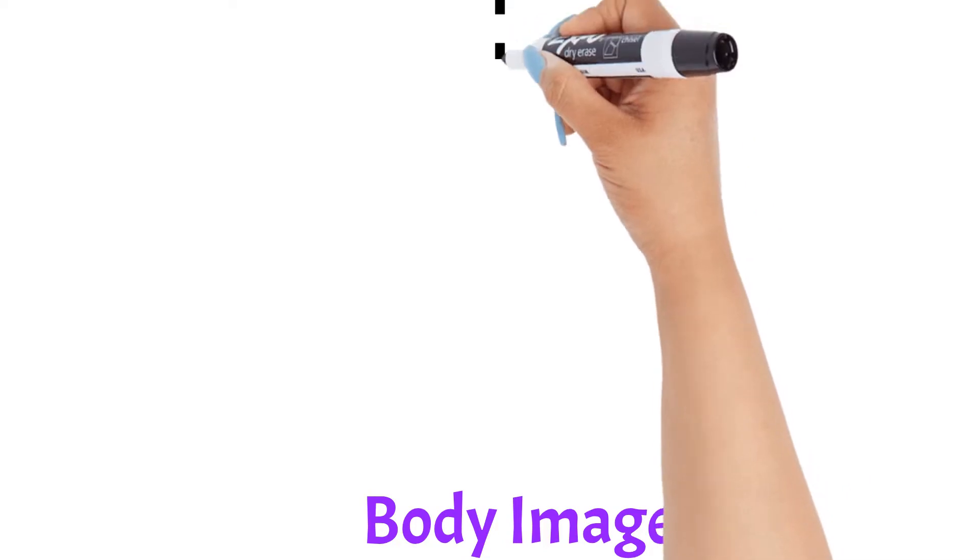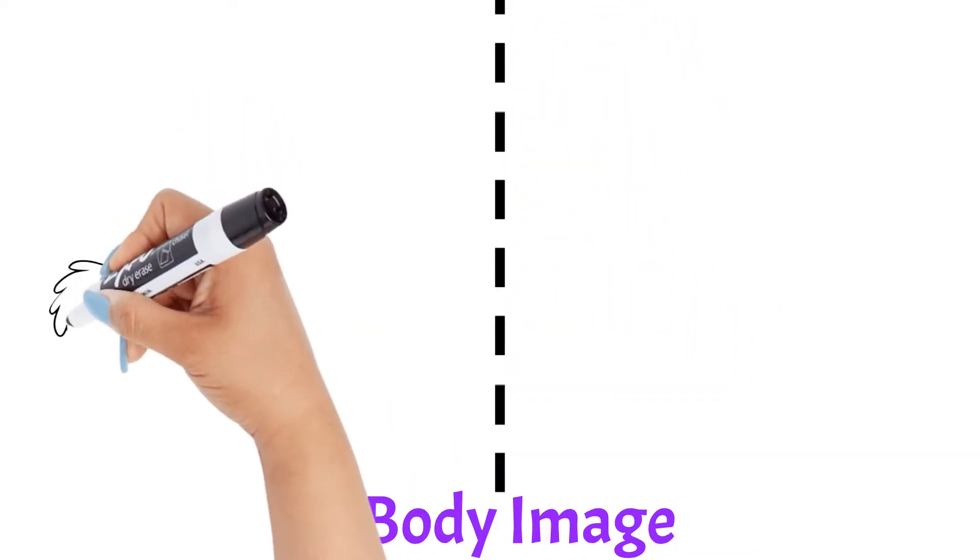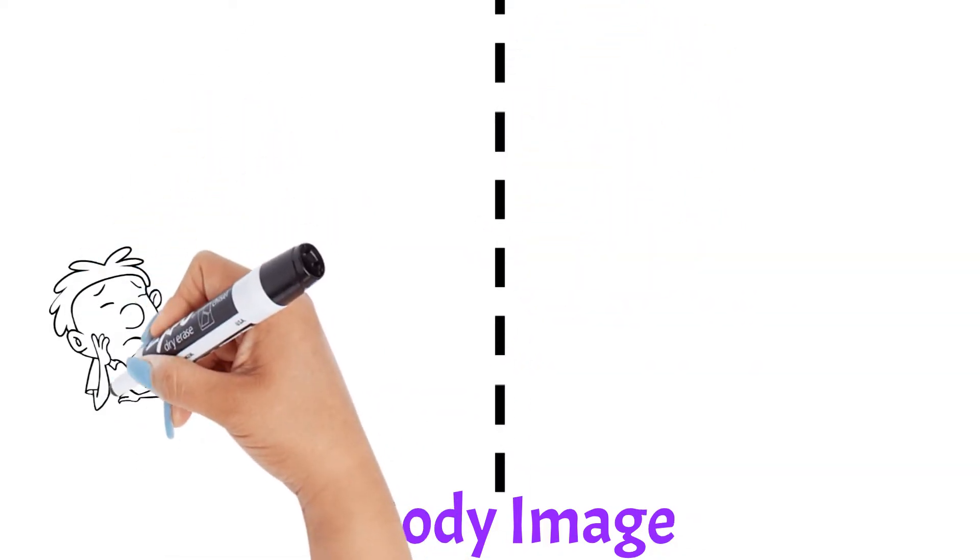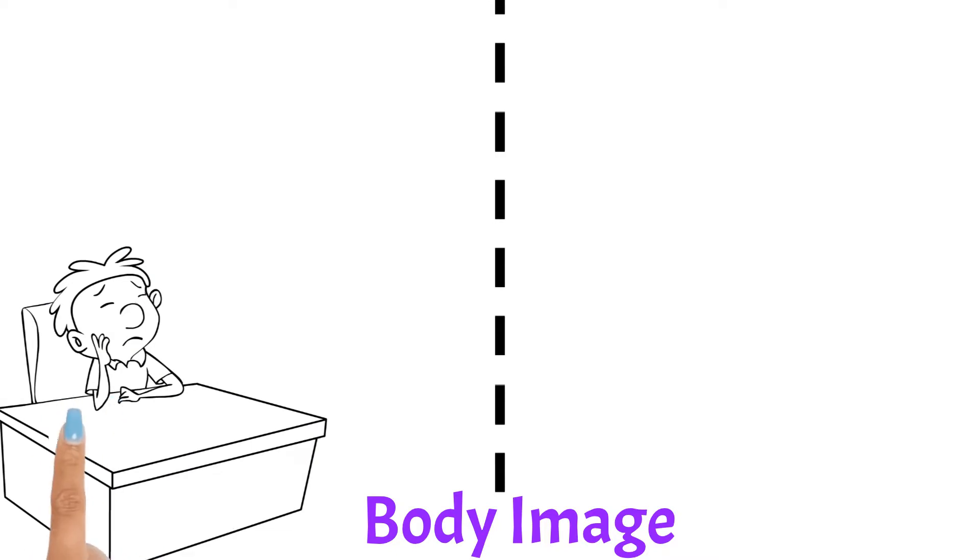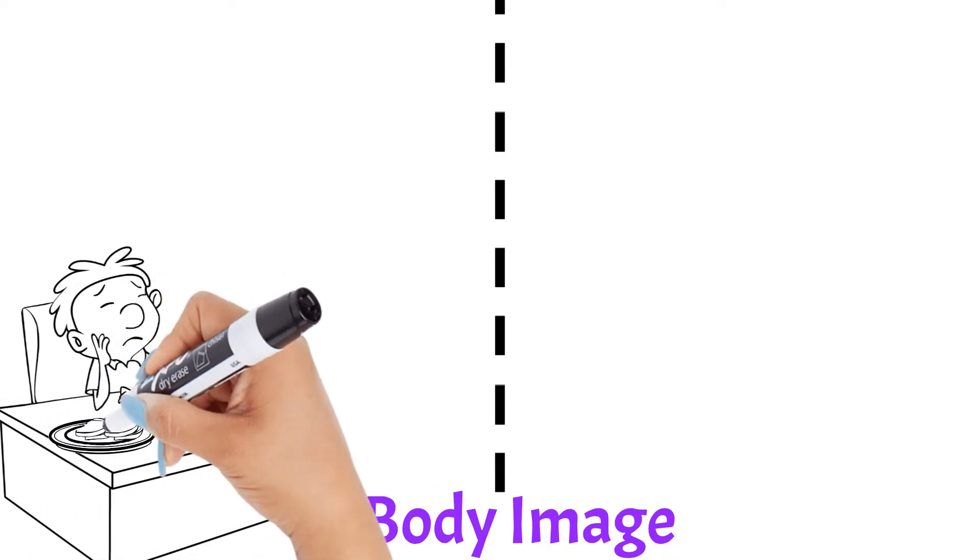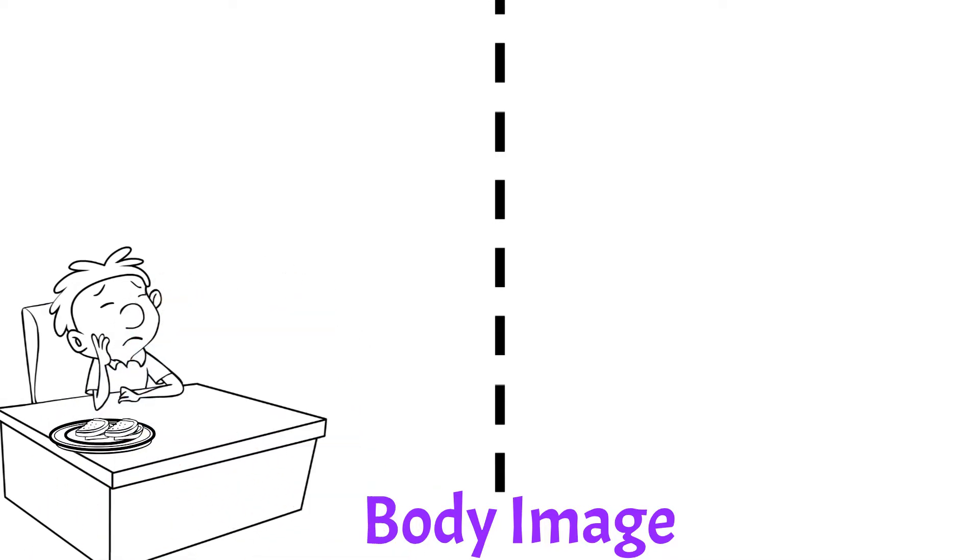Body image can also impact eating behaviors. People often perceive disordered eating to first begin in teens and young adults. However, it's actually these young childhood years where precedent is first established.